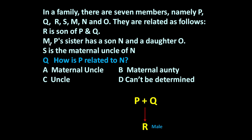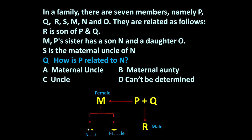M is P's sister, so let us write this. M is a female member who has a son N and a daughter O. So N is a male member and O is a female member.